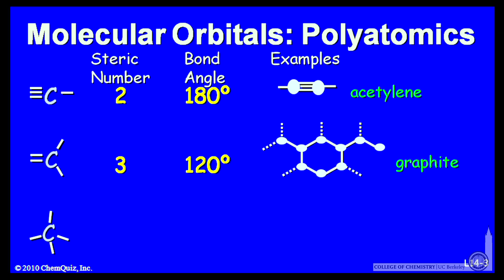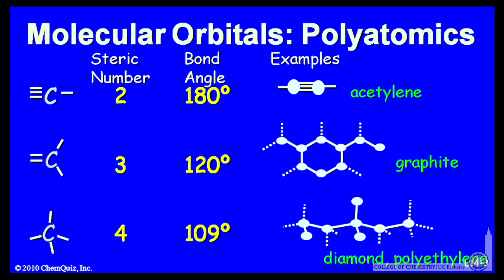Or tetrahedral arrangements where the steric number is 4—I have to have 109-degree bond angles. In things like polyethylene and diamond, those bond angles need to be accommodated.